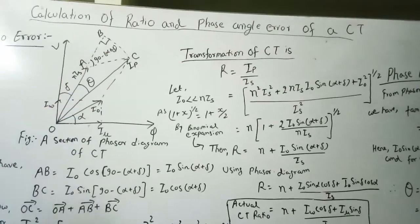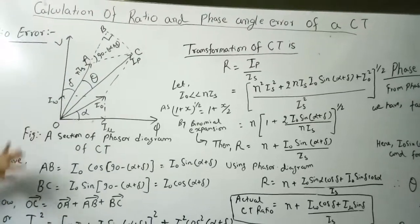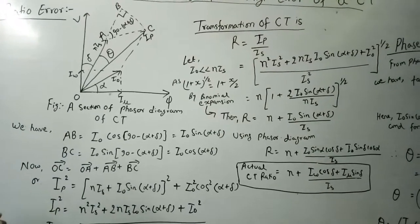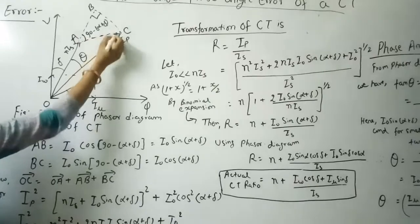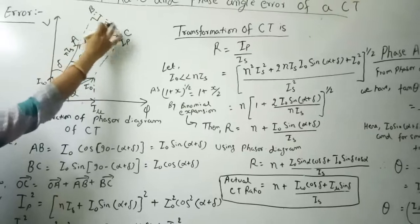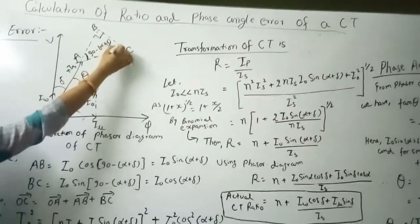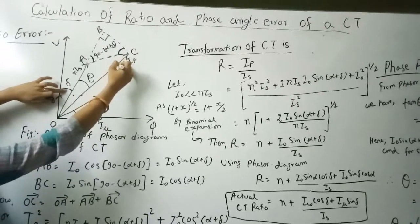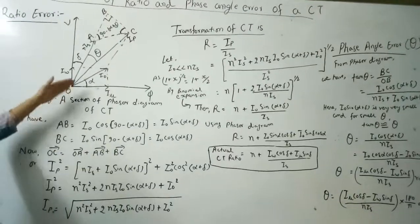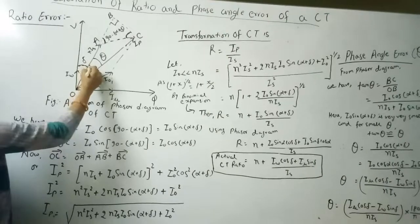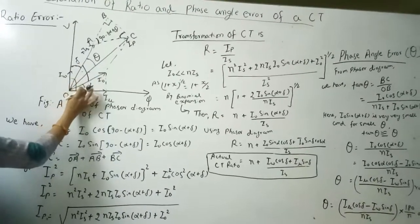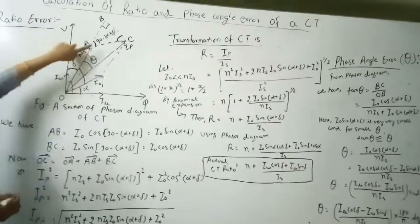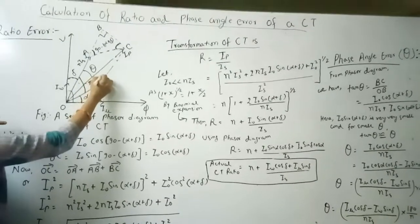We draw this perpendicular line because we apply the formula of sin θ and cos θ, and we need a right-angle triangle. Now, AB is parallel to I₀, and this angle is 90° − (α + δ). This angle is equivalent to the sum of these two angles. From the parallelogram, the exterior angle is equal to this angle, that is, 90° − (α + δ).